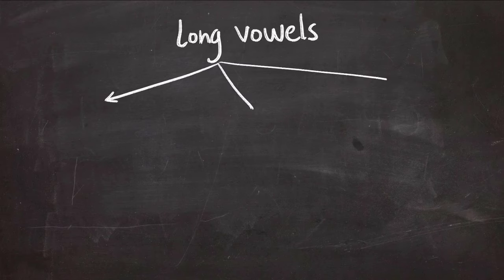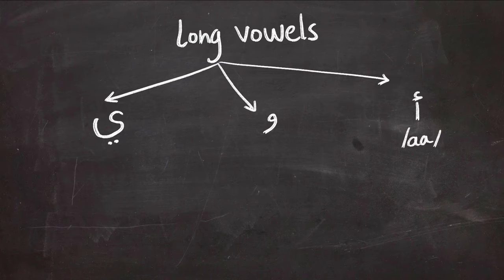Long vowels in Arabic are three: alif, waw, and ya. The alif gives us the long 'a' sound, waw gives us the long 'o' or 'oo' sound, and ya gives us the 'e' or long 'i' sound.